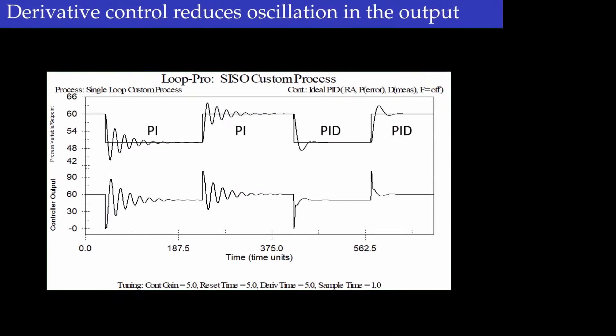Looking at the response of a process under PI control versus PID control, under PI control the output was oscillating significantly. For the same proportional-integral parameters, when you use the PID controller — meaning adding the derivative part — the oscillation reduces to a great extent, and the variability in the input also changes significantly.